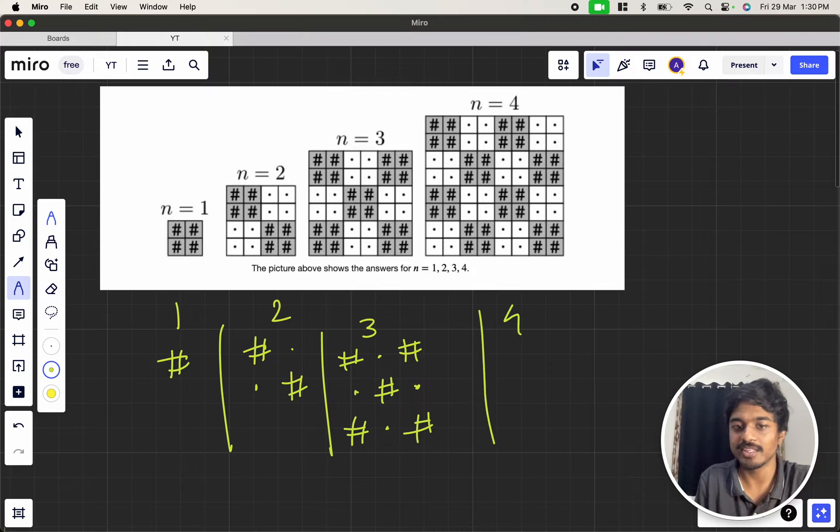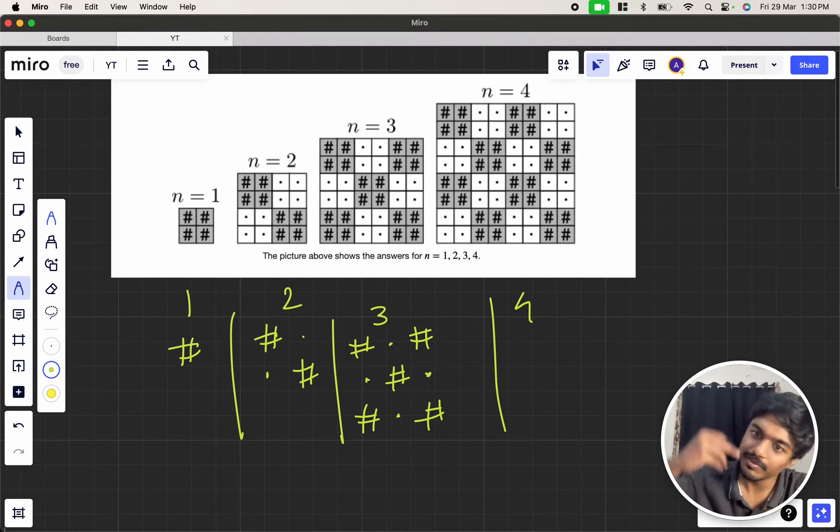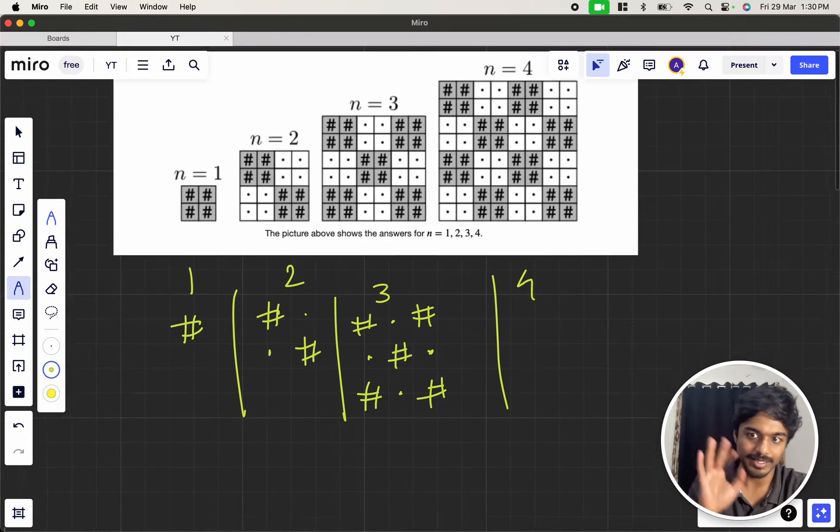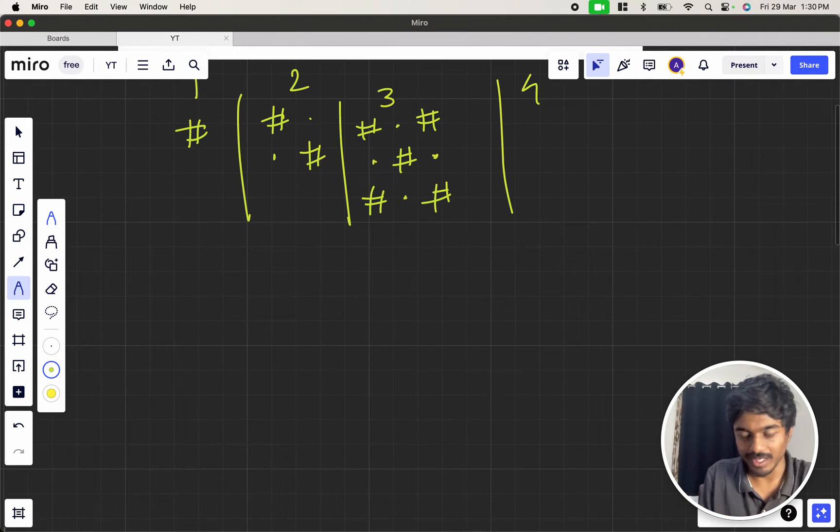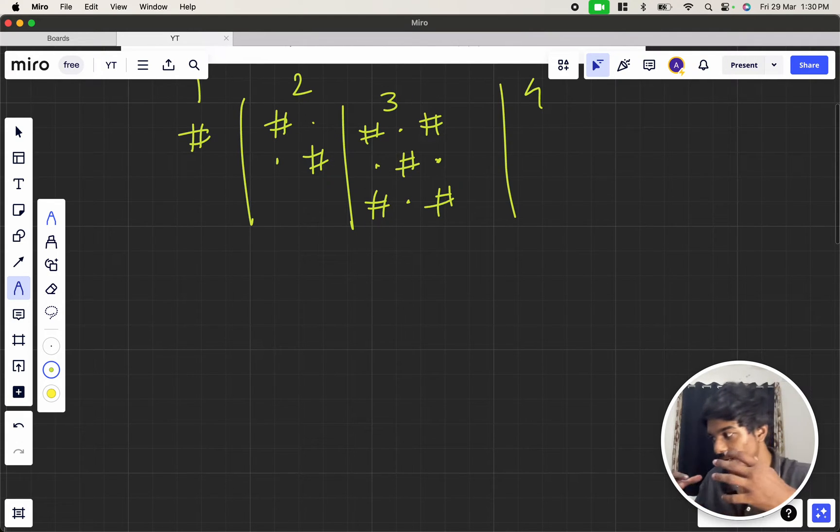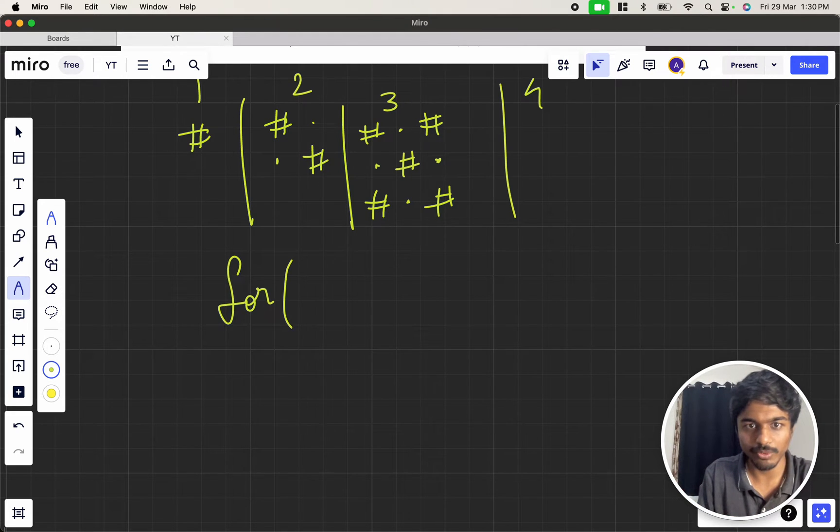Similarly for 4 and so on. Now we'll solve the problem for this basic pattern. Any 2D grid will have two things: the outer loop and the inner loop to iterate a matrix. So for i equal to 0 to i less than n, i++, and for j equal to 0 to n.